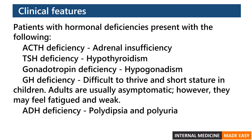Growth hormone deficiency presents with failure to thrive and short stature in children. Adults are usually asymptomatic; however, they may feel fatigued and weak. ADH deficiency presents with polydipsia and polyuria.